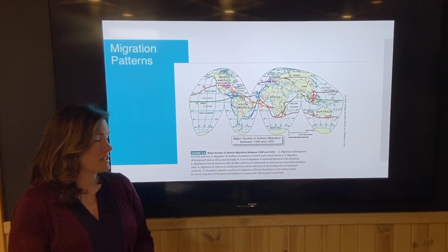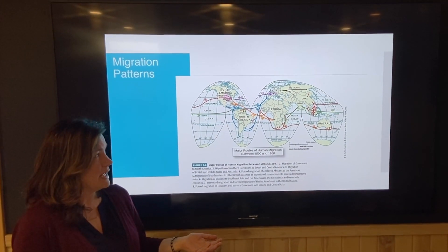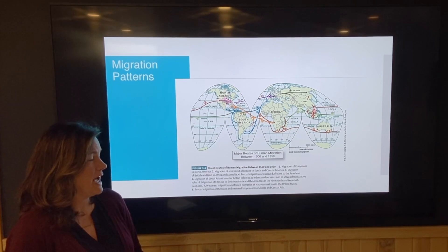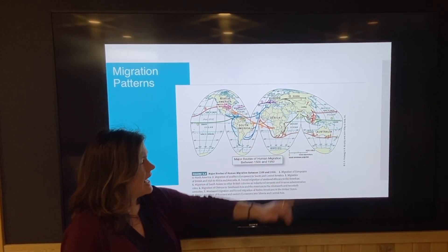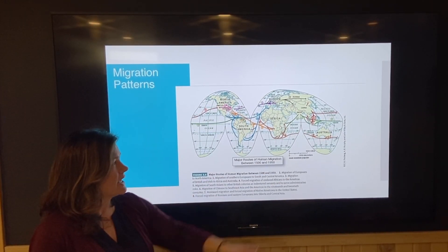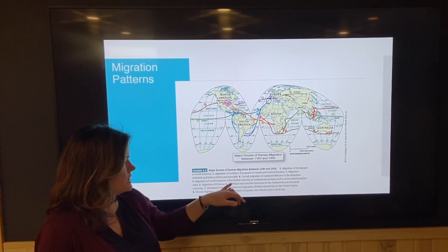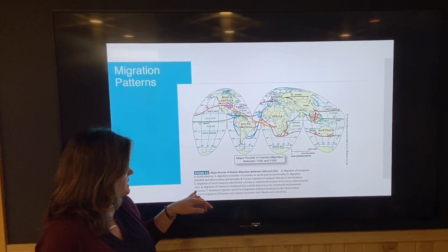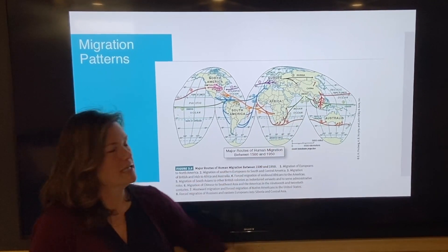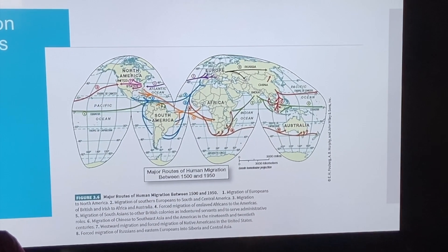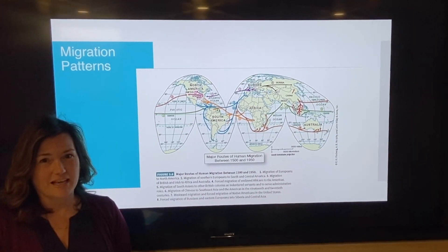First, you can get students thinking about where Tanzania is — maybe starting with India and what arrows go out of India. If they've learned their countries of the world, they can find themselves in East Africa and locate Tanzania. They can look at number five, the green arrow, which says the migration of South Asians to other British colonies as indentured servants and to serve administrative roles. So that migration flow brought people from India to East Africa, including Tanzania, bringing that housing style that you can see as a visible imprint on the landscape there today.